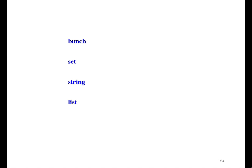Now we're going to look at four of the simplest data structures. They are the bunch, the set, the string, and the list.